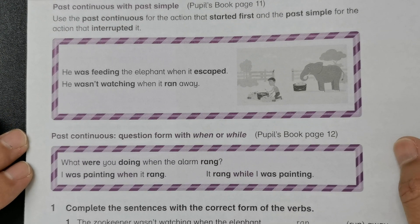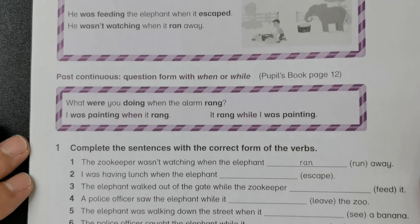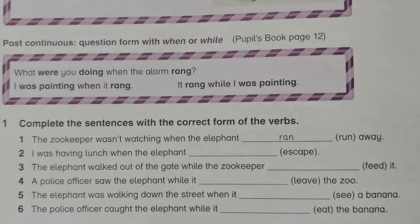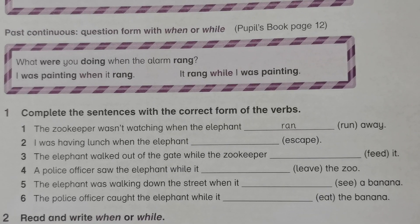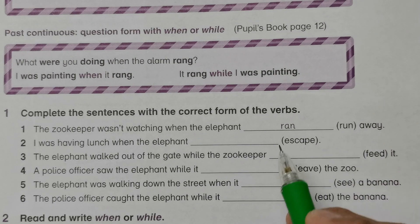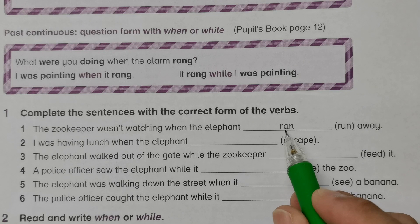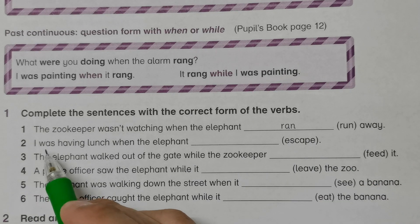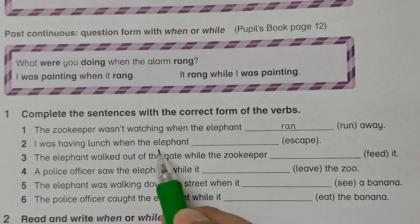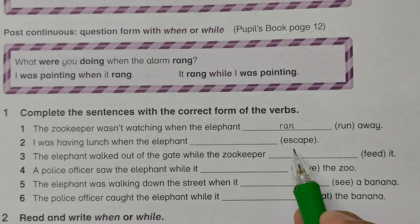We will continue to the workbook and go to Activity 1. Complete the sentences with the correct form of the words. Number one: 'The zookeeper wasn't watching when the elephant ran away' — 'ran' is simple past. Number two: 'I was having lunch when the elephant escaped' — we add -d to 'escape'.